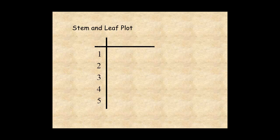The last digit of each number is a leaf, shown in these rows. For example, the number 35 is shown in the plot with a stem equal to 3 and a leaf equal to 5.